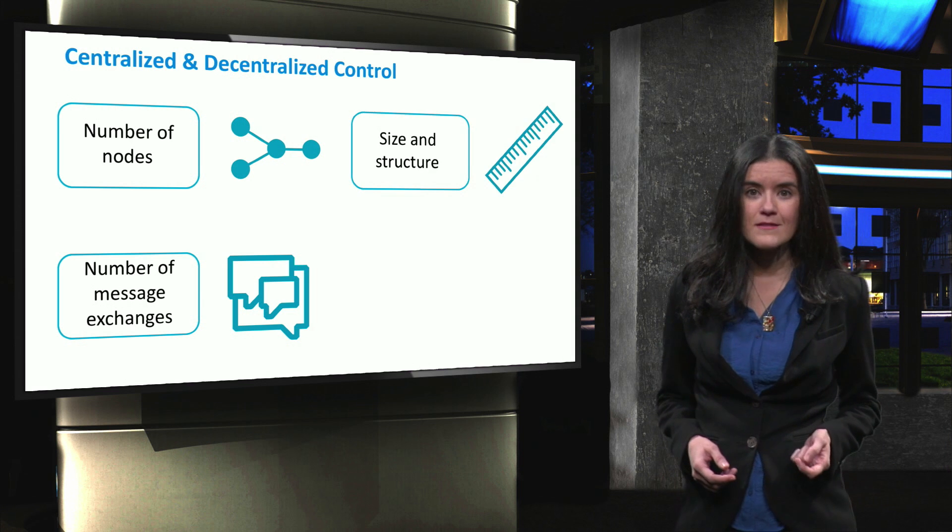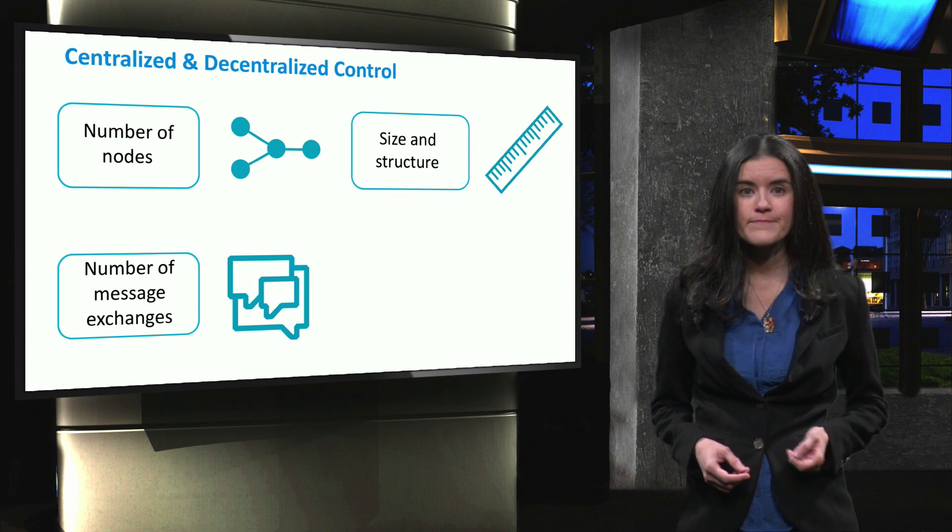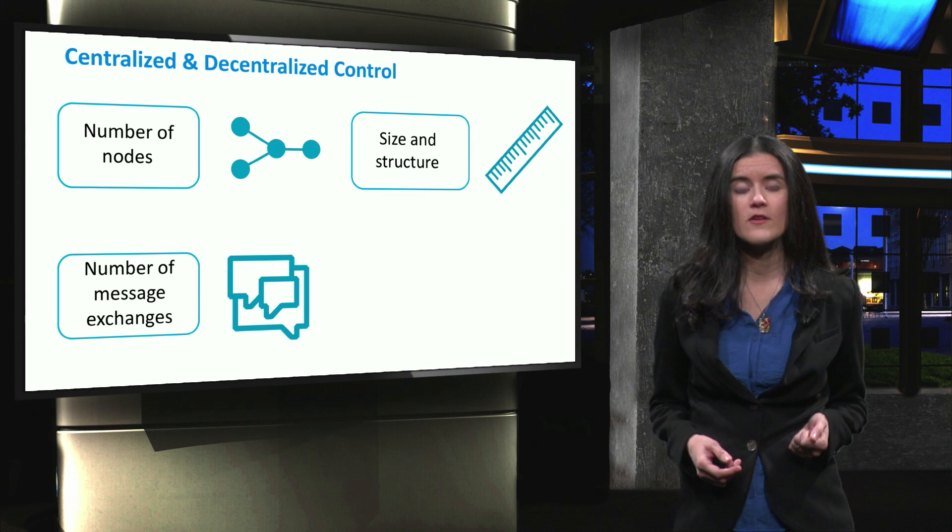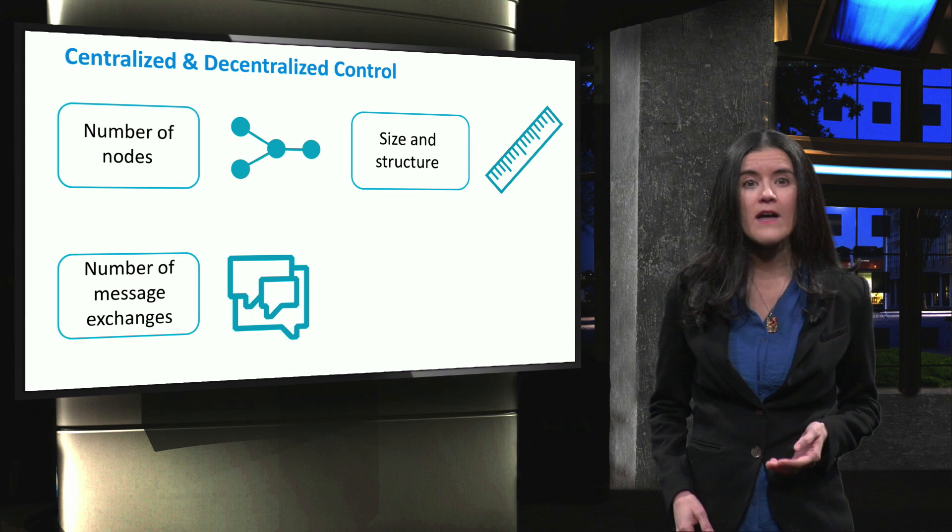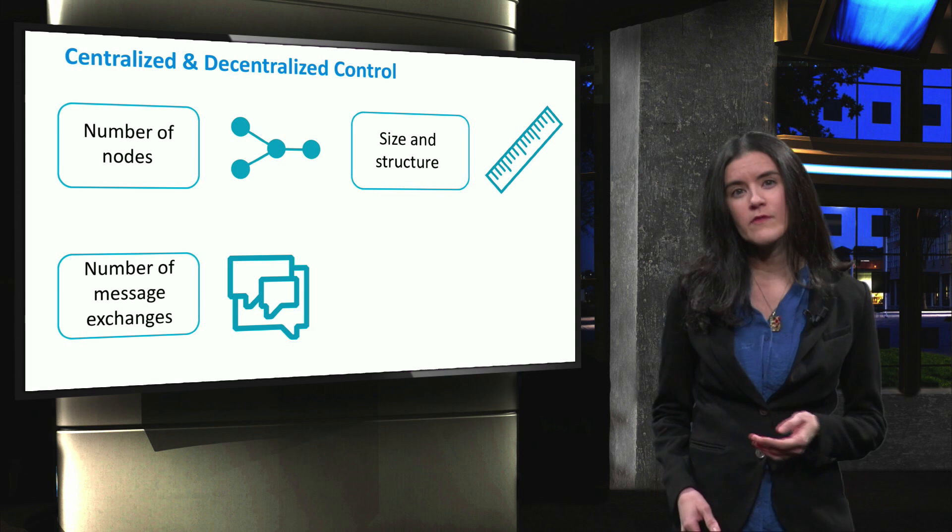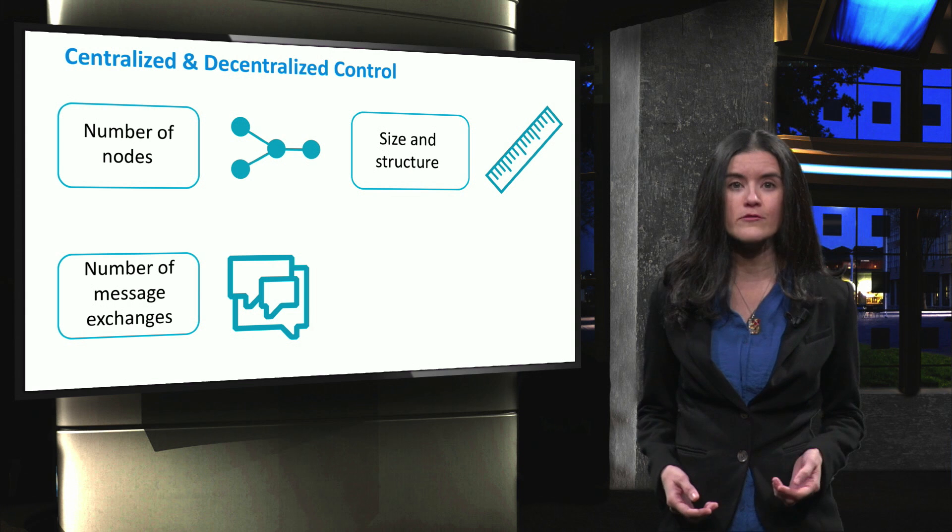Third, size and structure of the system model. The structure and complexity of the system needs to be considered. Decisions taken by different actors might not only increase the number of nodes but also impose extra technical and non-technical constraints.